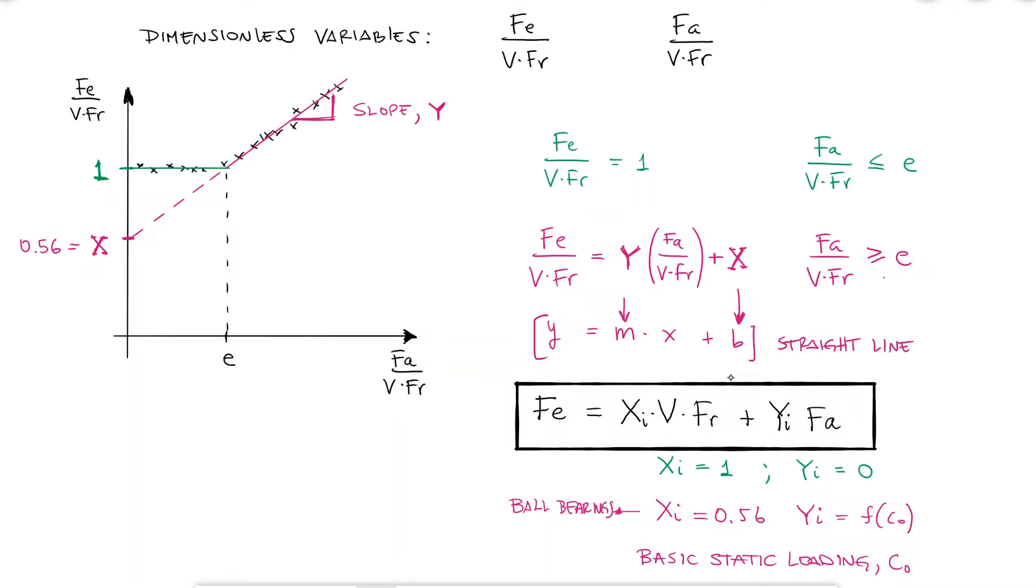This basic static loading C0 is defined as the load that would produce a total permanent deformation of 0.1% the diameter of the rolling element. C0 is usually accompanying C10 in the manufacturer's catalogues or websites.